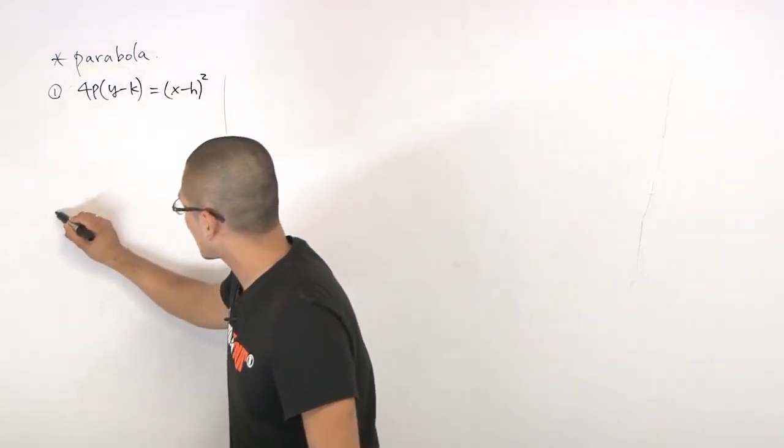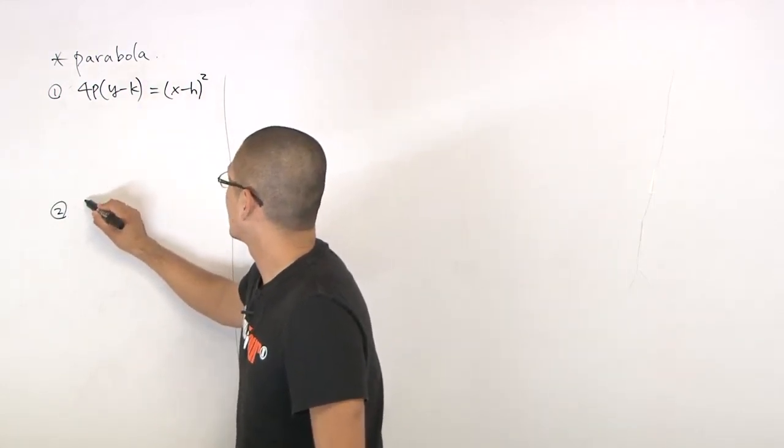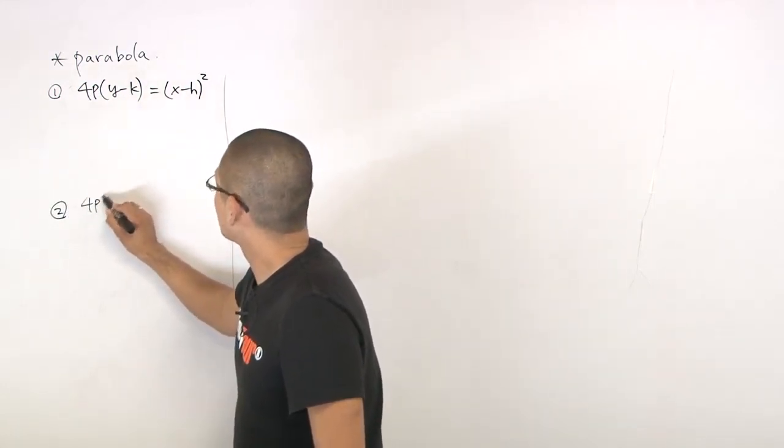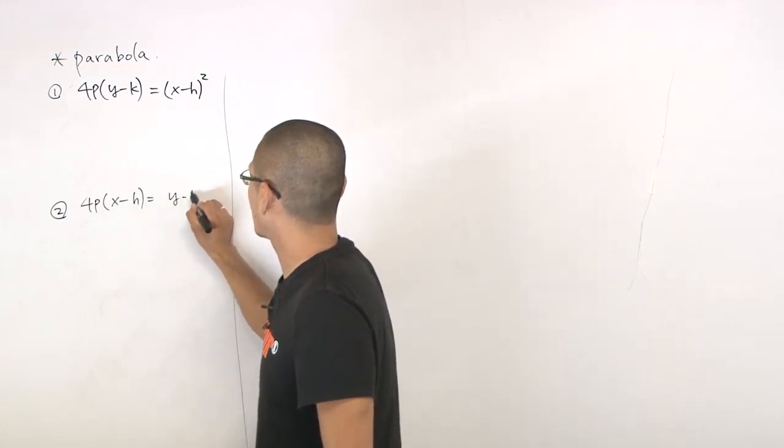Let me talk about second thing here. Second one is the opposite case where we have 4P times x minus h and y minus k squared.